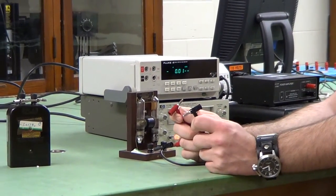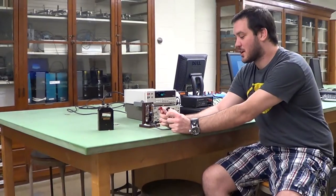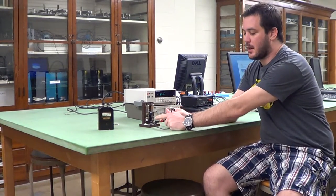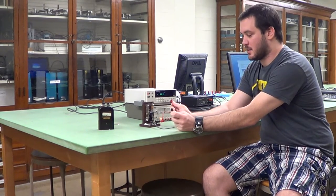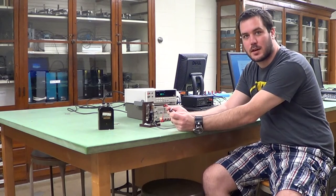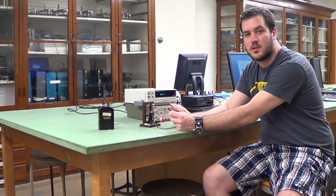Before we get started, the one thing you need to make sure you don't do is short-circuit the cell, and you do that by connecting the two ends together. So if I was to take these two wires and smack them together, I'd be short-circuiting the cell. Again, don't do that.